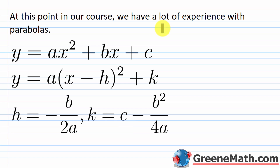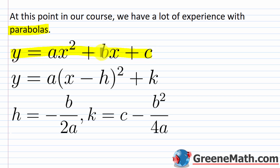At this point in our course we have a lot of experience with parabolas. A parabola is the graph of a quadratic equation. For a vertical parabola we start with something like y, or f(x), equals ax squared plus bx plus c. This form is very useful if you're trying to find the zeros of your quadratic function — you replace y with zero and plug in for a, b, and c using the quadratic formula.